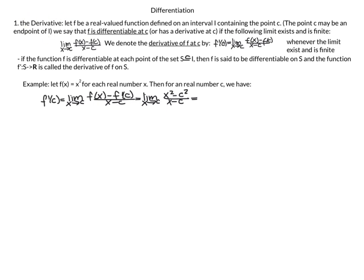We start with the definition of the derivative. Let f be a real-valued function defined on an interval I containing the point C. The point C may be an endpoint of I. We say that f is differentiable at C, or has a derivative at C, if the following limit exists and is finite: the limit as x approaches C of f(x) minus f(C) all divided by x minus C. We denote the derivative of f at C by f'(C). If f is differentiable at each point of a set S, a subset of I, then f is said to be differentiable on S, and the function f': S → ℝ is called the derivative of f on S.